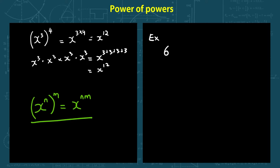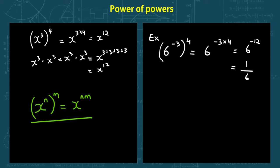Let's do some examples. What if I have 6 to the power of negative 3, and that's to the power of 4? All I have to do is multiply the powers with their signs: negative 3 times 4 gives me 6 to the power of negative 12, which is actually 1 over 6 to the power of 12.